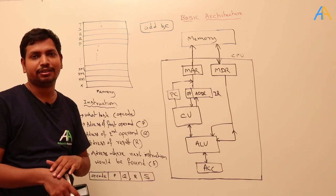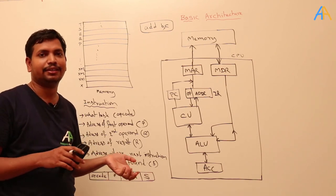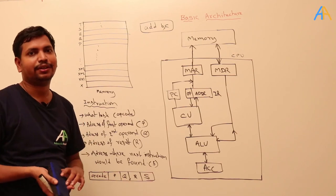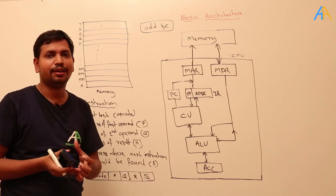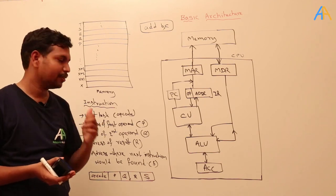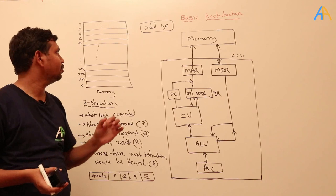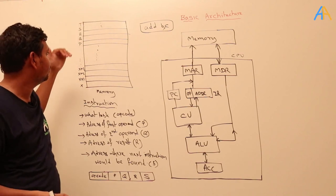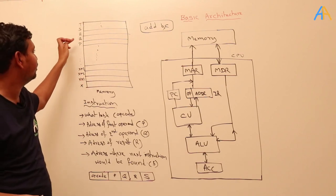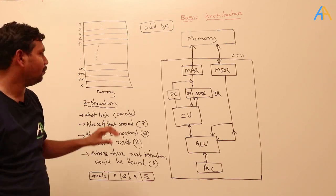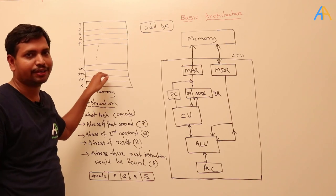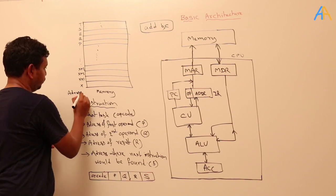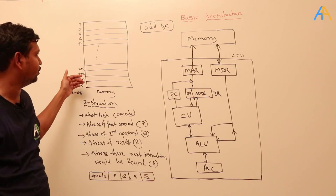Depending on the processor, instructions will vary in type and how they are designed. But every instruction must specify where to fetch from. Instructions are stored in memory locations — memory is a series of blocks. For example, some blocks hold instructions and some hold data like P, Q, R, S, T. We must tell the processor from which address it has to fetch the instruction.